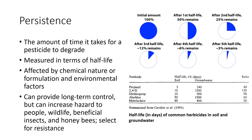In some situations where reinfestation is likely or long-term pest control is desired, persistence may be advantageous. But prolonged persistence can also increase hazard to people, wildlife, beneficial insects, and honey bees. Highly persistent pesticides select for resistance faster. The breakdown of a pesticide does not always mean that hazards associated with it have been eliminated — some pesticides break down into other, more toxic materials. For instance, the low-toxicity insecticide acephate may break down into the more toxic methamidophos.